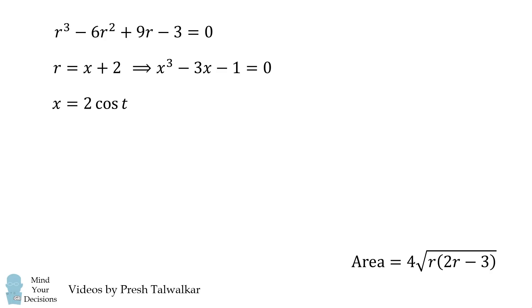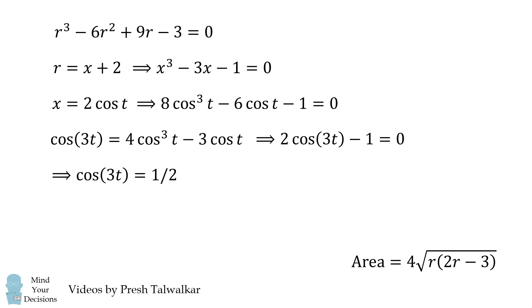From here, we're going to make another substitution. Suppose x is equal to 2 times the cosine of t. If we substitute that in, we get the following equation. We then use the clever substitution that the cosine of the triple angle 3 times t is equal to the following. So we can substitute that in. We get 2 times the cosine of 3t minus 1 is equal to 0. We thus get that cosine of 3t is equal to 1 half, and we have a family of values for t.